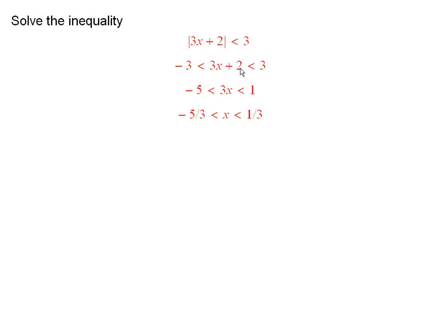So you see, if I subtract 2 from here, here, and here, it will preserve the inequality and that just gives me this here. So you have 3x is somewhere between negative 5 and 1.